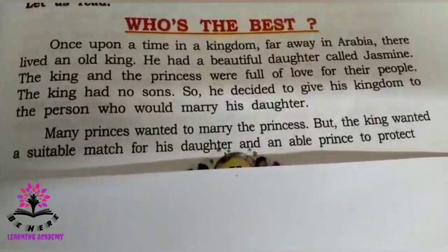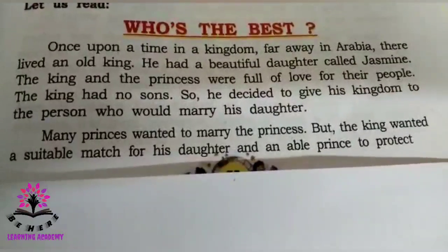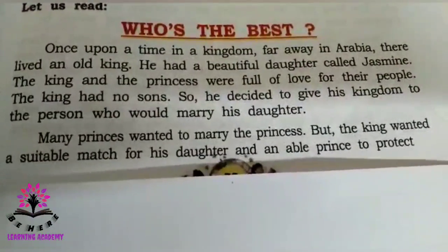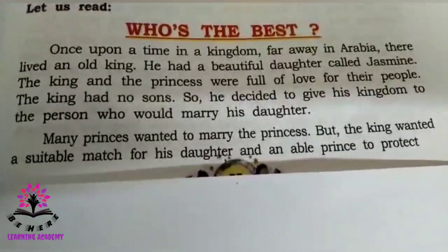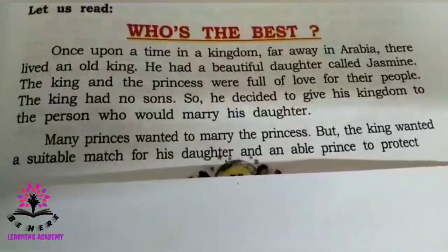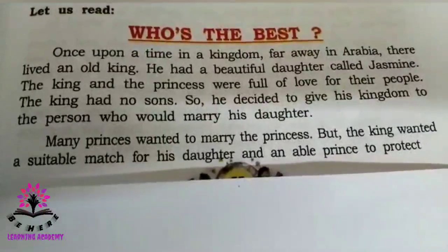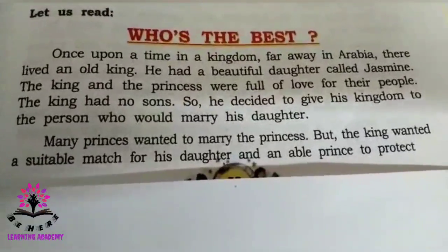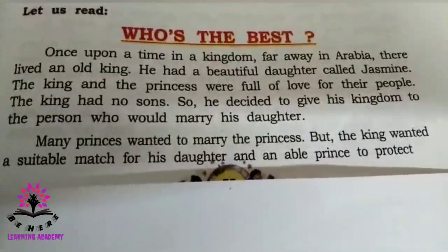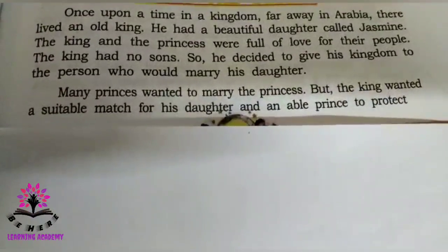There is a kingdom in Arabia where there was one old king who had a beautiful daughter called Jasmine. The king and the princess had a lot of love for their citizens. The king had no sons — he had only one daughter — so he decided to give his kingdom to the person who would marry his daughter.